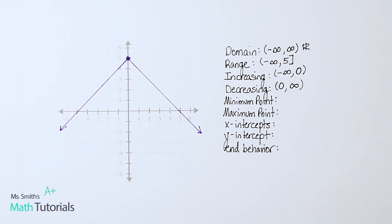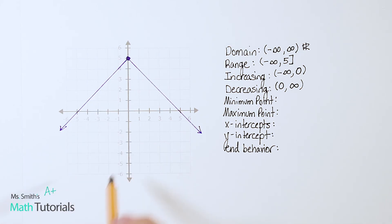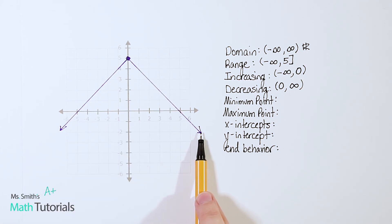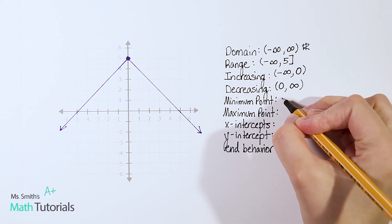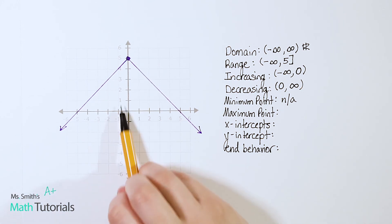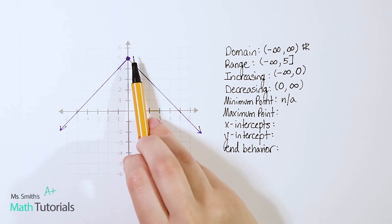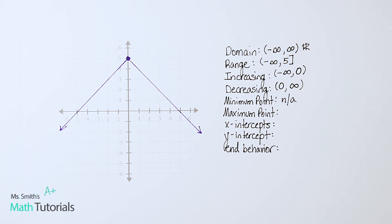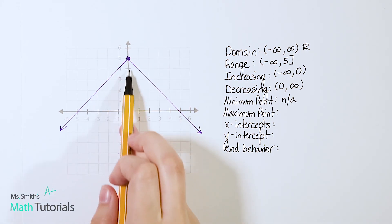For minimum point: is there a lowest point on this graph I can literally pinpoint? No — those are arrows at the bottom, so they keep going forever. You will never have infinity as a minimum or maximum. For maximum point: yes, right up here — this graph will never go above positive five. So we list that point: (0, 5).